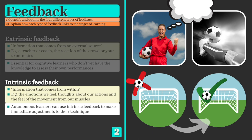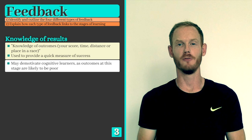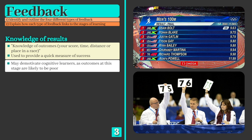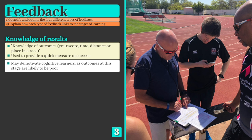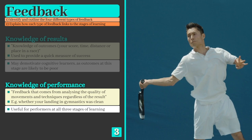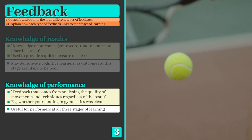Feedback can also come in the form of knowledge of results and knowledge of performance. Knowledge of results essentially means knowing your score, time, distance, or place in a race, and can be used to provide a quick measure of success. It is a form of extrinsic feedback as it is provided from outside sources. Knowledge of performance, on the other hand, is feedback from analysing the quality of movements and techniques regardless of the result — for example, how good your timing felt when playing a ground stroke in tennis, or whether a landing after a vault was clean. This form of feedback can be intrinsic or extrinsic.